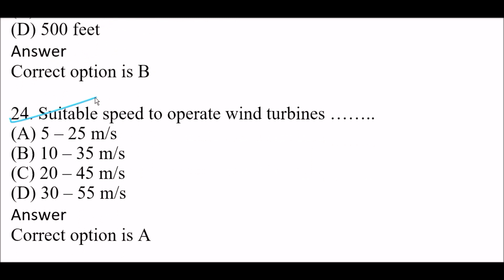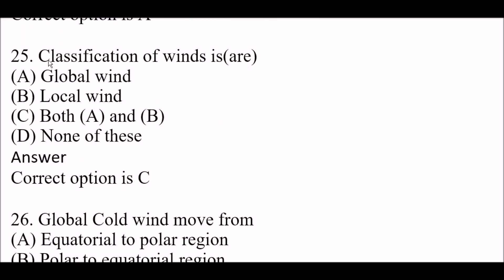Next question: what is the suitable speed to operate wind turbines? Option A: 5 to 25 meters per second. Option B: 10 to 35 meters per second. Option C: 20 to 45 meters per second. Option D: 30 to 55 meters per second. Right answer is Option A — 5 to 25 meters per second. Next question: the classification of winds is — Option A: global wind. Option B: local wind. Option C: both A and B. Option D: none of these. Right answer is Option C — both global wind and local wind.